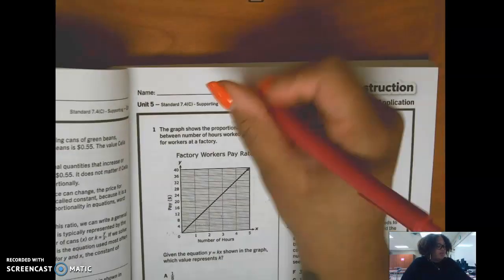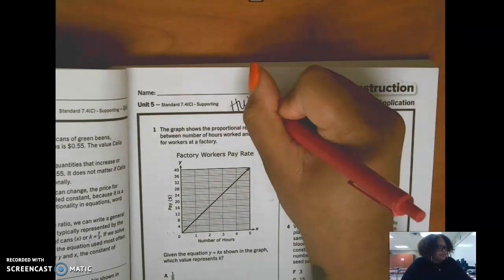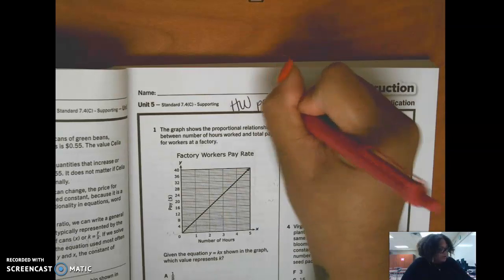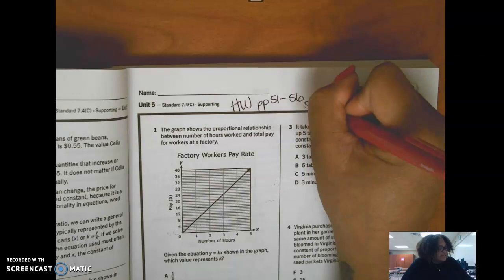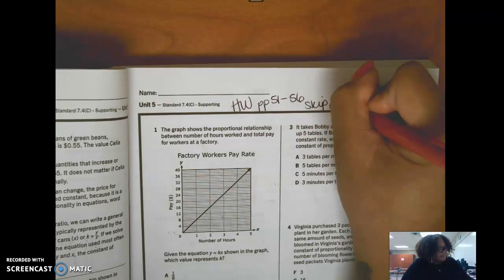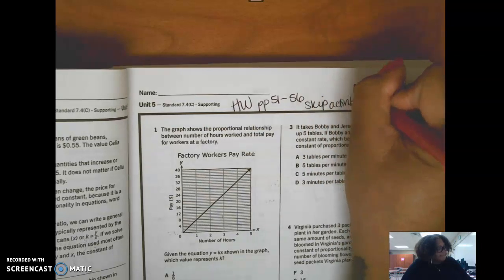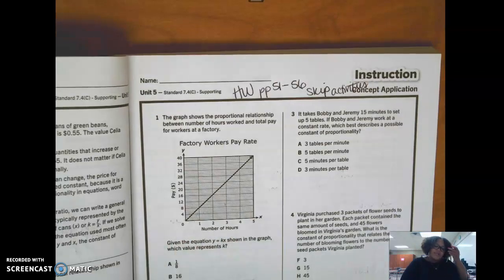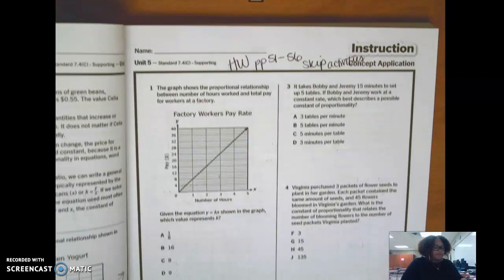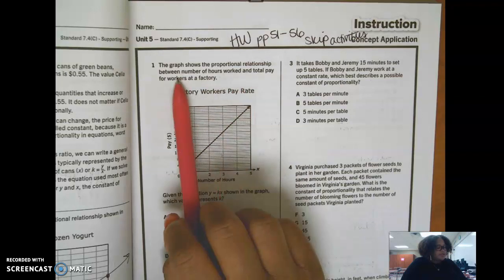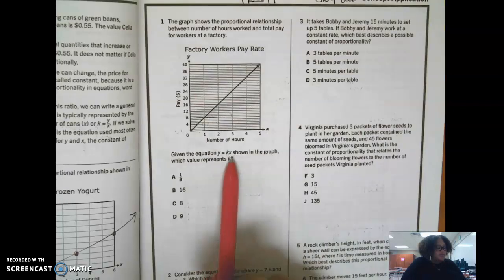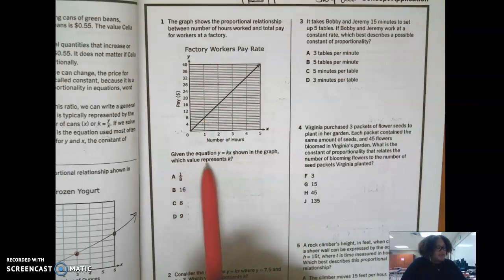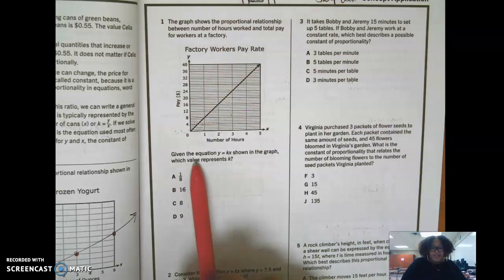So on to your homework pages 51 through 56, and we're going to skip the activities. This is what we're going to get into for this week. It says the graph shows the proportional relationship between number of hours worked and total pay for workers at a factory. Given the equation y equals kx shown in the graph, which value represents k.